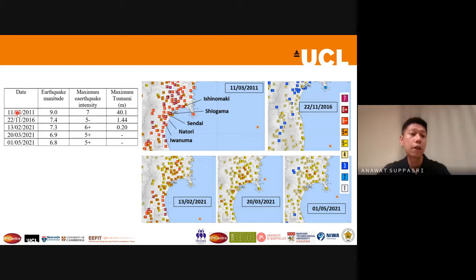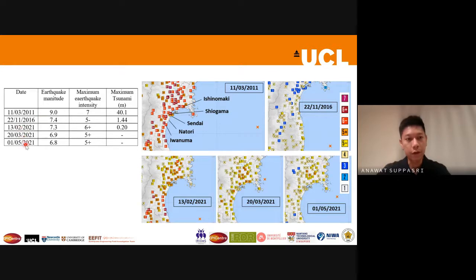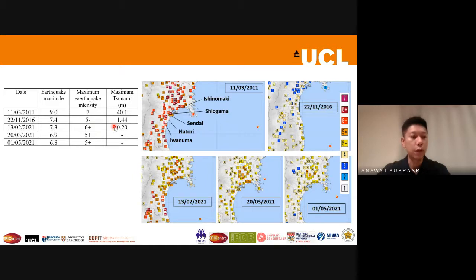We continue to interview these fishery industries because it is not only the 2011 earthquake — magnitude 9 with maximum seismic intensity of 7 — but also in 2016 and this year in February, March, and May, there were very large earthquakes that almost reached maximum intensity, and in some cases small to moderate tsunamis as well. This allows us to gather more information for moderate earthquake scenarios.